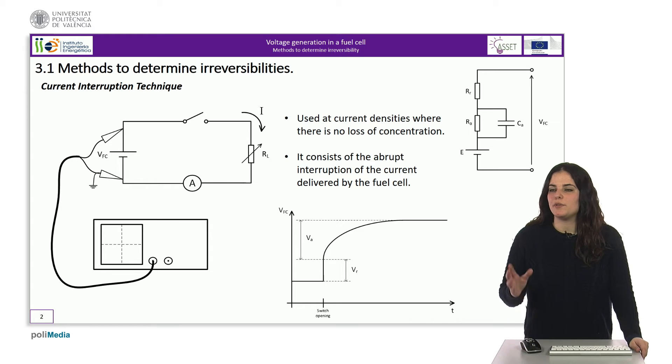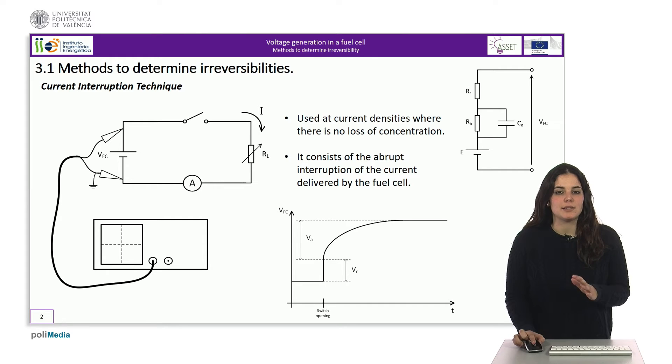Through the equivalent model of the fuel cell, it is possible to determine for each point of operation which are the mechanisms of losses that occur. There are different techniques to determine the value of each of the components of the equivalent model. The simplest and most economical technique is the current interruption method. This method can be used when the current density does not reach values where concentration losses can appear. Most fuel cells avoid reaching this area because of the significant drop in efficiency that occurs and because of the stress the electrolyte suffers.